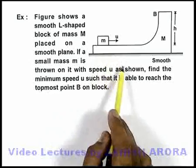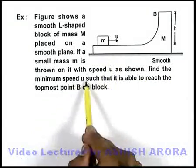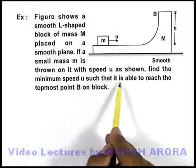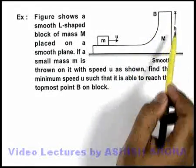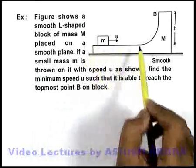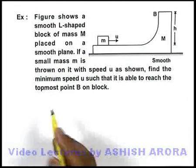in horizontal direction, we are required to find a minimum speed u such that it is able to reach the topmost point B of the block. It is given that B is at a height h above the level on which this small m is thrown.